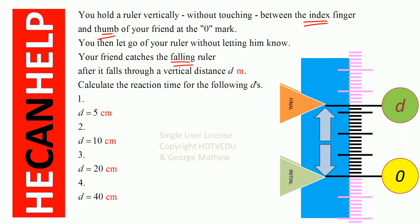If your friend catches the ruler after it falls through a distance of d meters: if d is equal to 5, what is the reaction time? If d is equal to 10, what is the reaction time? If d is equal to 20, what is the reaction time? If d is equal to 40, what is the reaction time?